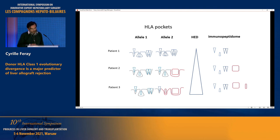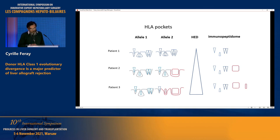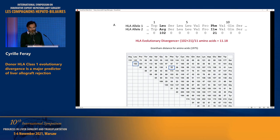What is the heterozygous advantage? Each allele of HLA molecules is co-expressed. If the patient is homozygous for one given locus, the immunopeptidome will be poorer, less complex, less rich than if the two alleles are different. And it has been shown that the more divergent the two alleles are, the greater the immunopeptidome.